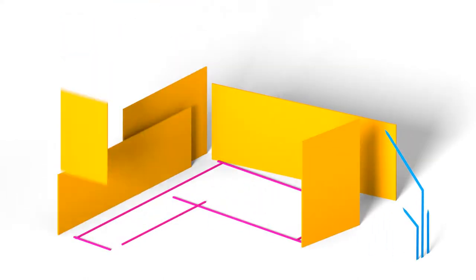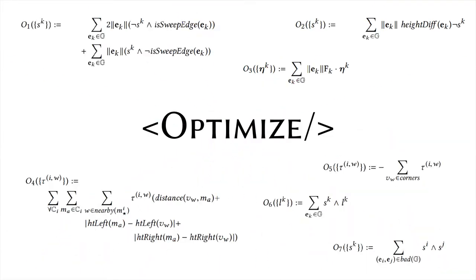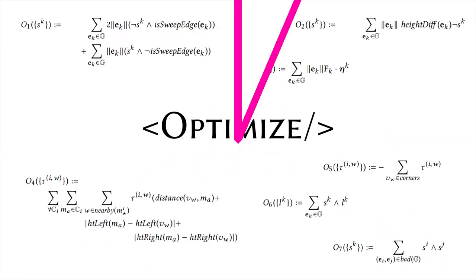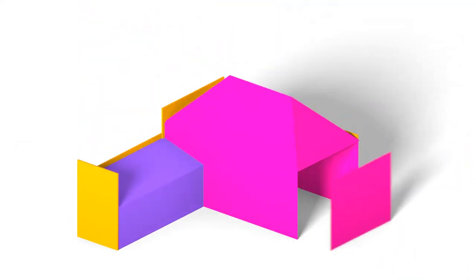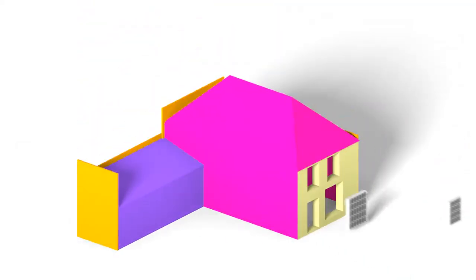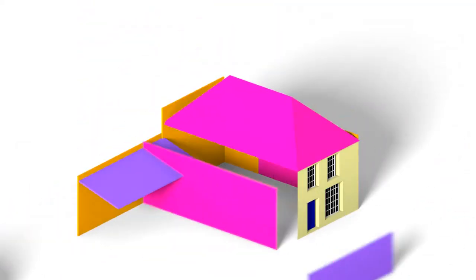From the images we find features such as windows and doors, and we combine all of these in a large optimization, the result of which we can use to reconstruct solid architectural models with a high level of detail.